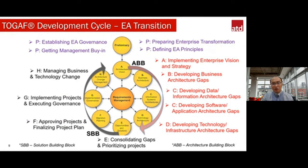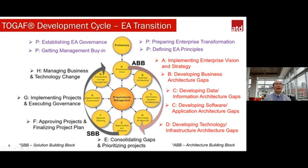Any changes coming in go through the same ABB process again to see the impact. In the middle of the ADM is Requirements Management — this is where the requirement management understands the whole interdependency and impact of any particular change in the enterprise. That's why there are double arrows going everywhere — Requirements Management acts like a sensor, like the brain of a human being. In the EA world we call it a meta model — it understands the whole relationship spectrum across every phase of enterprise architecture.